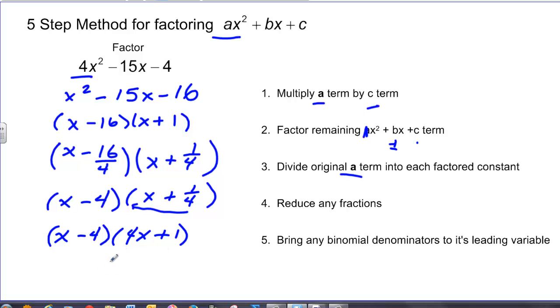And you'll notice now when I multiply, I have 4x squared plus x minus 16x minus 4, which is 4x squared minus 15x minus 4, and that's what we were trying to get back. So this is the five step method for factoring. It may take a little time to get used to, but it works real well if you just follow it step by step.